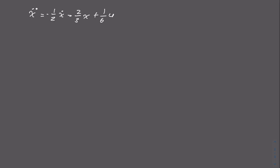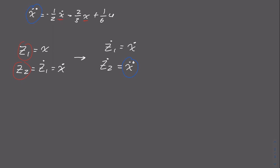Now that we have ẍ separated, we need to get this into matrix form. There are two states: ẋ and x. We represent these as z1 = x and z2 = ż1 = ẋ. Taking the derivatives gives us ż1 = ẋ and ż2 = ẍ. Notice that ẍ appears in our equation, so ż2 = ẍ = −(1/2)ẋ − (2/3)x + (1/6)u.